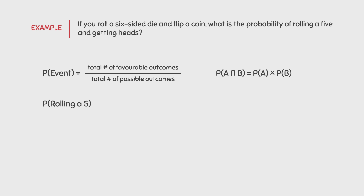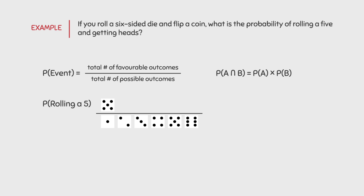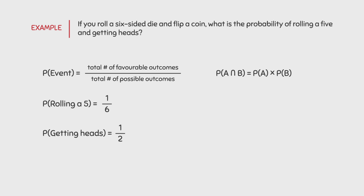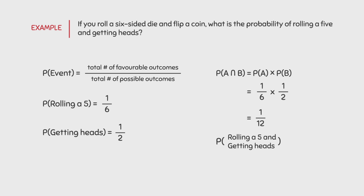For the first event, there is only one favored outcome, which is rolling a 5, and there are a total of 6 possible outcomes since we are rolling a 6-sided die. As a result, the probability of rolling a 5 is equal to 1 over 6. For the second event, we know that the probability of getting heads is equal to 1 over 2, or 50%, because there is only one desired outcome and there are a total of 2 possible outcomes. Now that we have the probabilities for each event, we can use the formula — all we have to do is multiply them together. 1 over 6 times 1 over 2 gives us an answer of 1 over 12, or 0.0833.